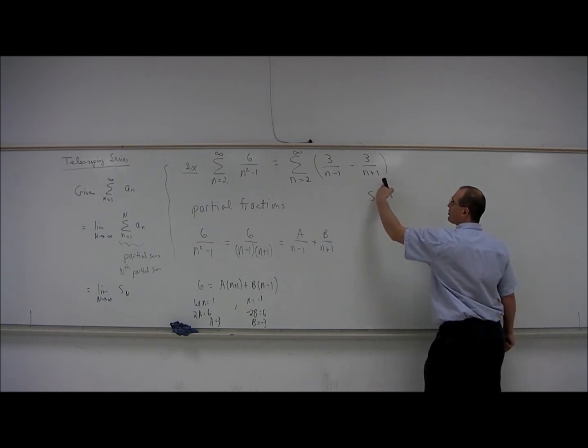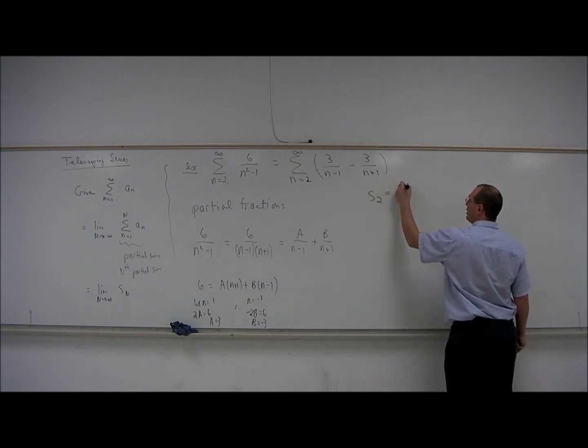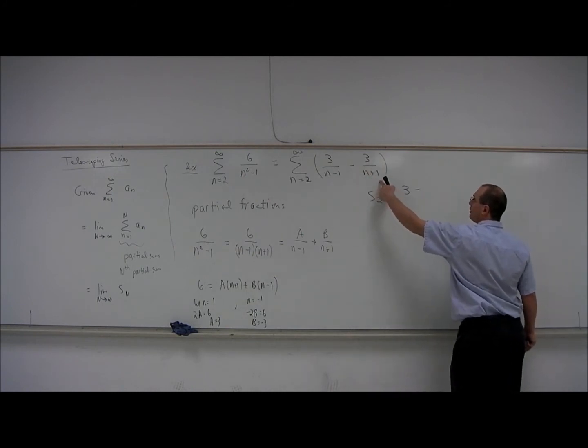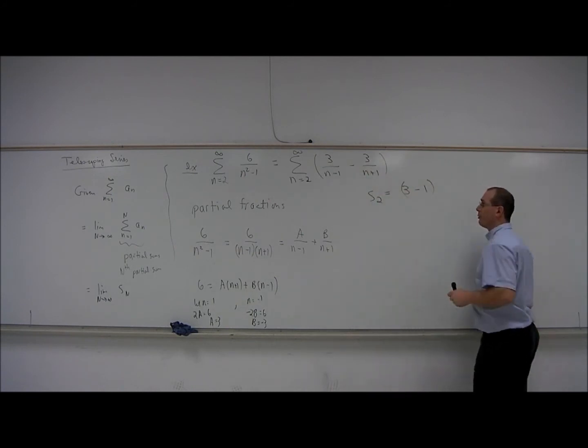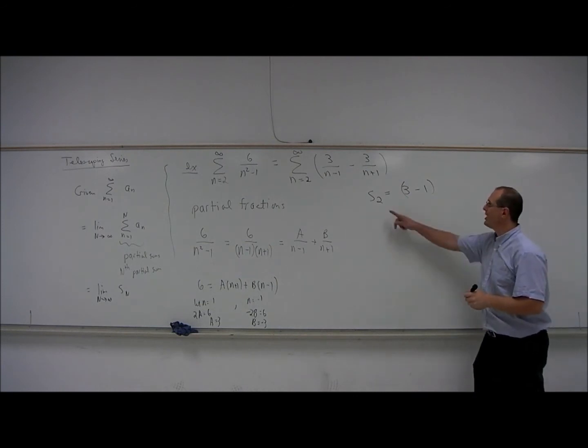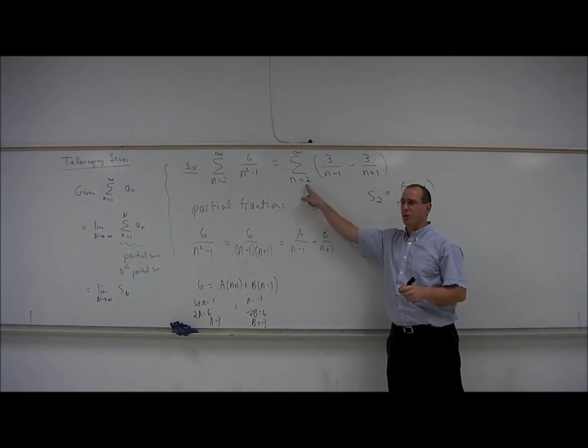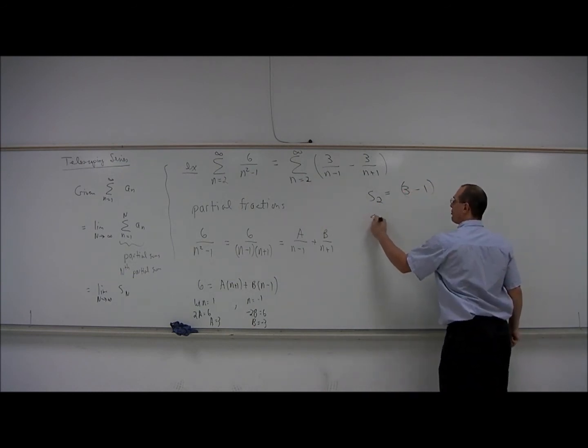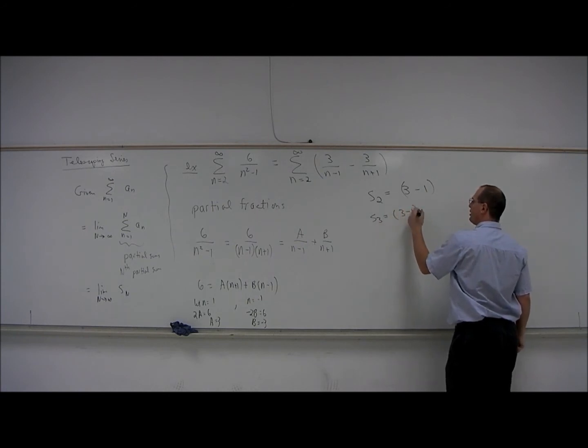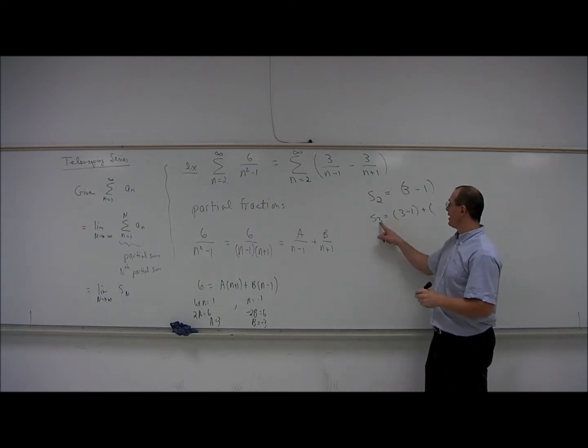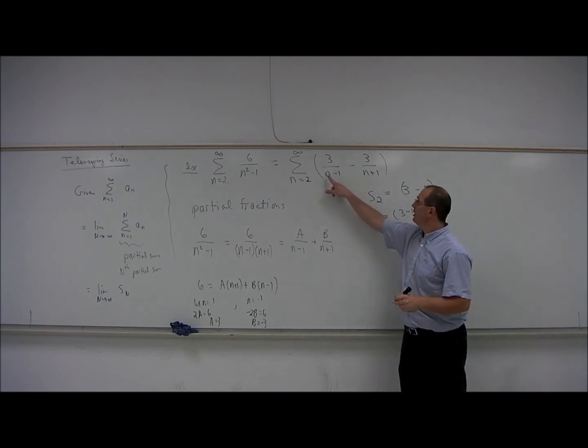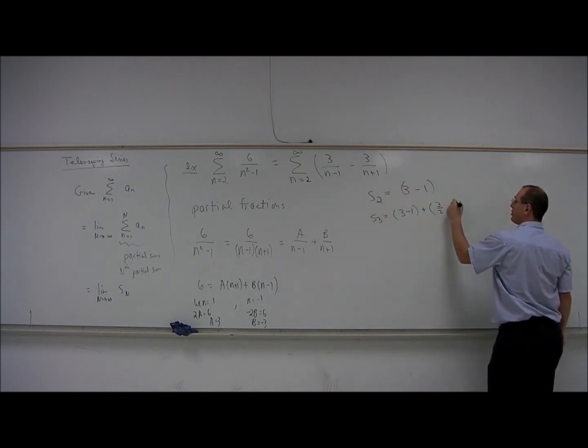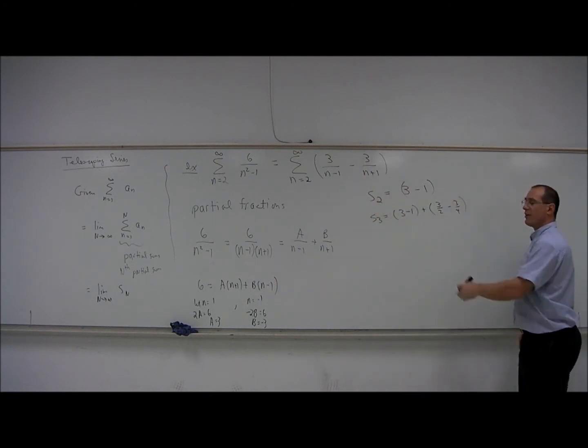S2, I'll just call this one, S2 will be the first term. It's going to be 3 minus 3 over 3 is 1. 3 minus 1. I'll use S2 here because I'm plugging in n equals 2. Let's just keep these on the same page. So S3 will be 3 minus 1 plus, when you plug in n equals 3, you get 3 halves minus 3 quarters. And so far, nothing interesting is happening.